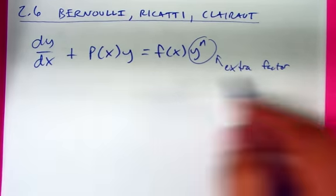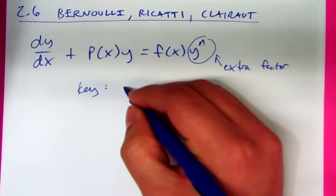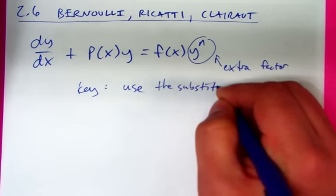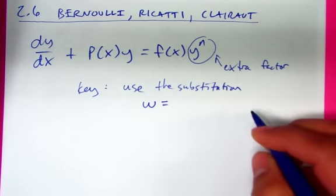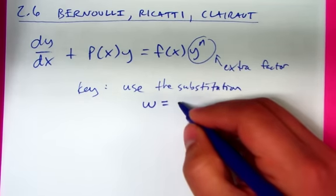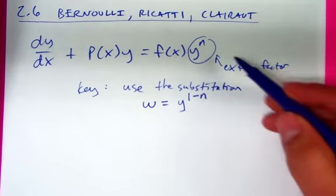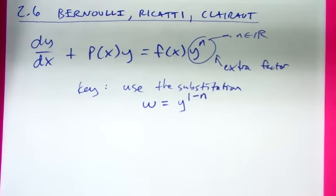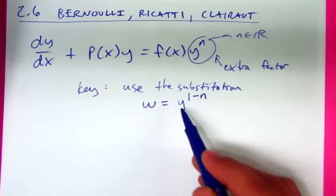The idea is that to solve this differential equation, you're going to use a substitution. We'll call the new variable w, and it's always going to be y to the 1 minus n. So whatever this power is — and by the way, this exponent can be any real number, it doesn't have to be an integer, though most of the ones you'll see are — this is the substitution you're going to use.